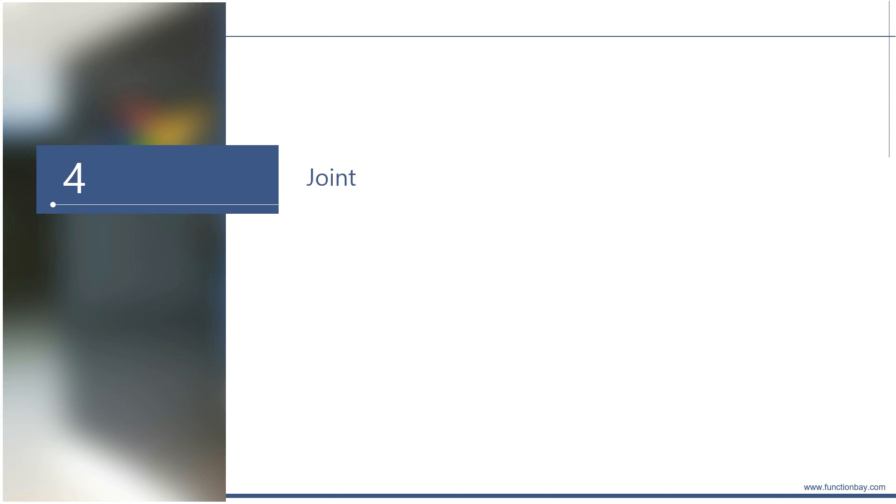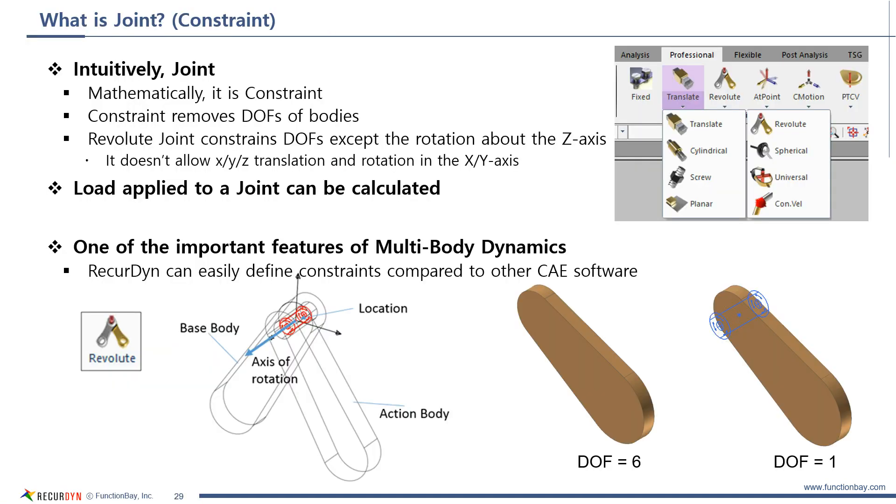The next topic is joint. Joint is also known as constraint. Joint is quite an intuitive name while constraint is a mathematical name. Joint is used to constrain degrees of freedom of bodies.